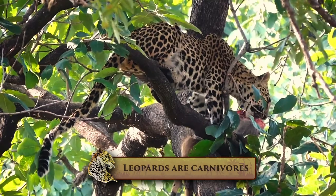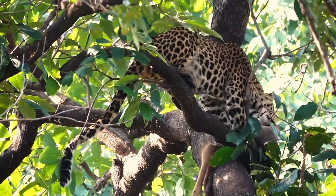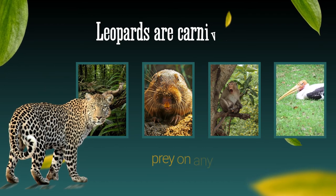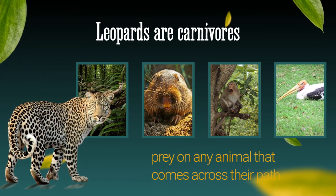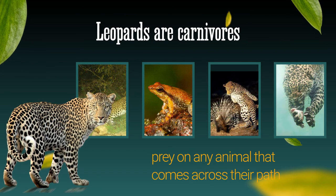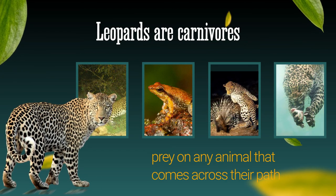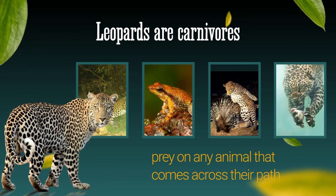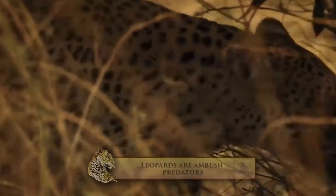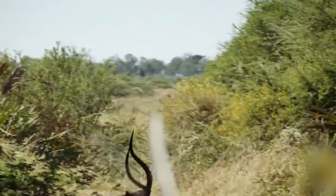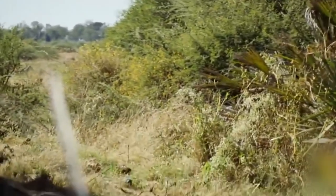Leopards are carnivores but they aren't picky eaters. They will prey on any animal that comes across their path, like rodents, monkeys, snakes, large birds, amphibians, fish, antelopes, cattle and porcupines. Leopards are ambush predators — they crouch and sneak up to their prey and pounce before it has a chance to react.